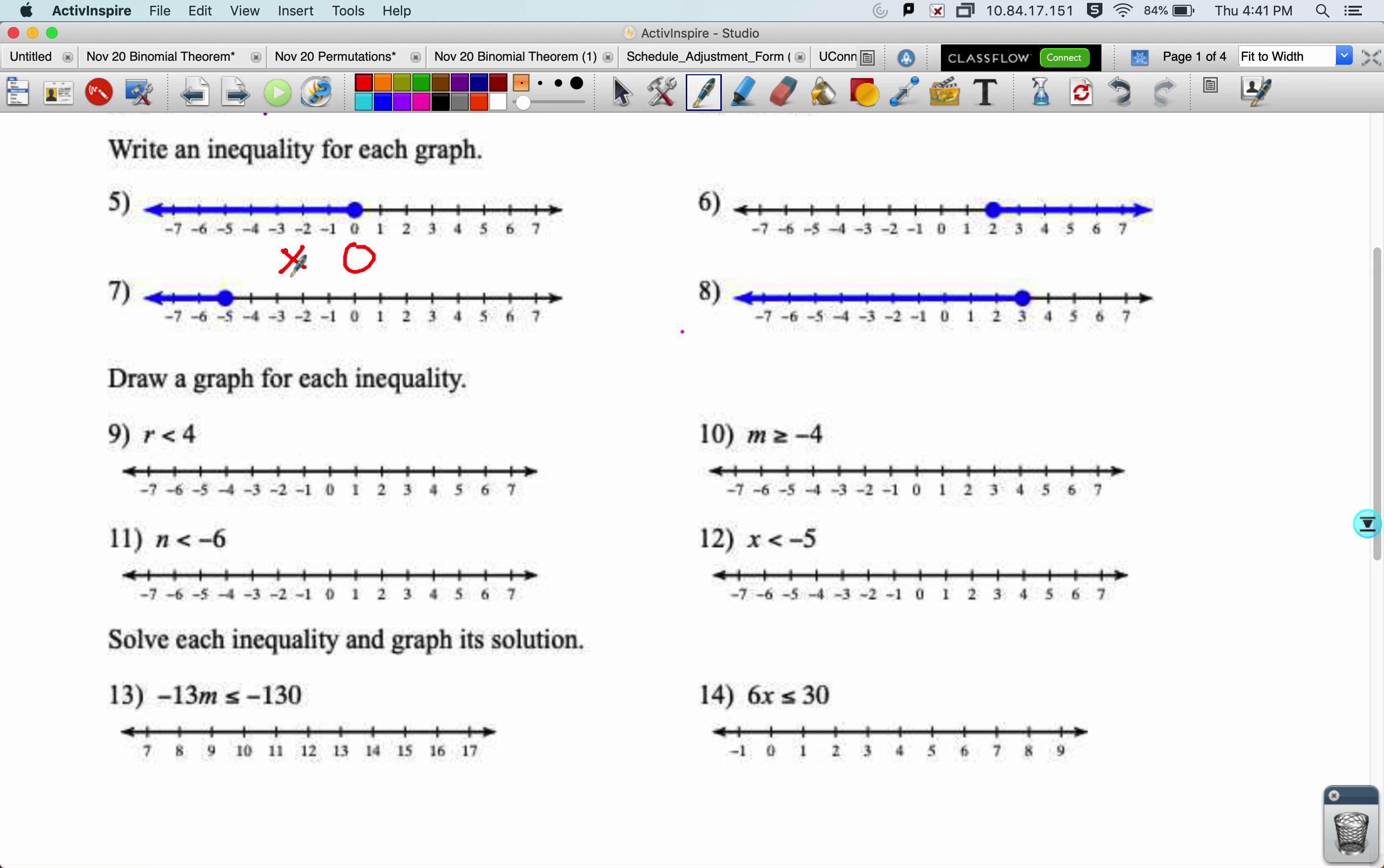Now we have to put a symbol in between our variable and that number, and for that we look at the end of the arrow. It kind of looks already like a less than symbol. So I put a less than symbol in here, and then very last, I decide if I want to have that or equal to part. This dot is filled in, so I do want that or equal to.